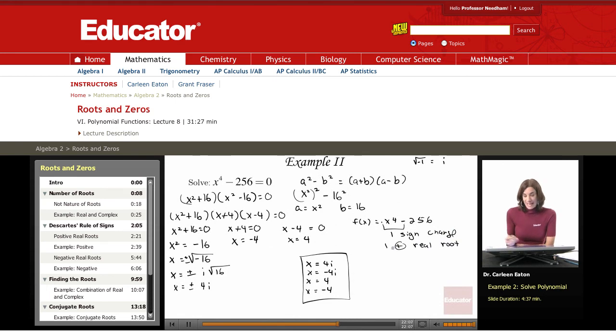This tells me that I'm going to have one positive real root. Or less than that by an even number. But I can't go, because then I'd be going into negative numbers, and I can't say that there's negative one real root. So it wouldn't make sense. So it's just one positive real root.